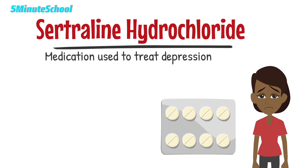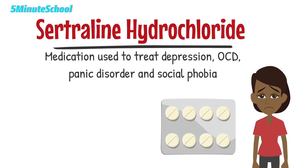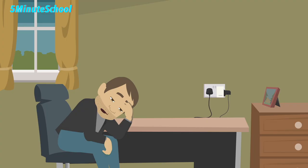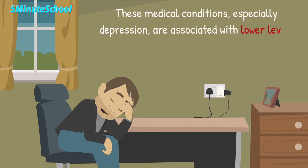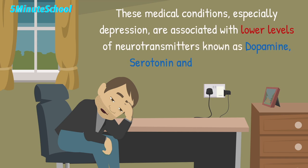Sertraline hydrochloride is a medication used to treat depression and certain conditions known as obsessive compulsive disorder, panic disorder, and social phobia. Often with these medical conditions, especially in the case of depression, there are low levels of the neurotransmitters dopamine, serotonin, and norepinephrine.